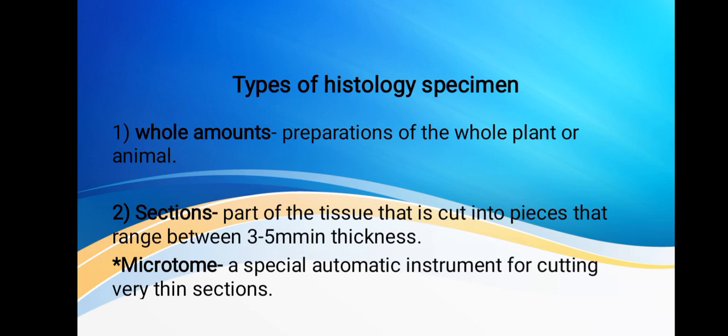Whole amounts are preparations of the whole plant or animal. Examples include protozoa and fungi. This type is for tissue less than 0.5 millimeters in thickness.